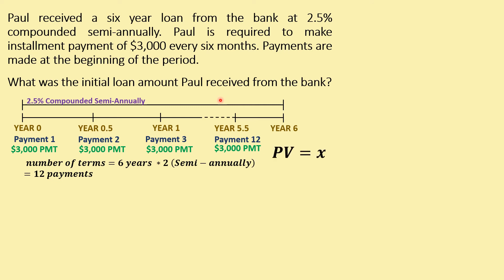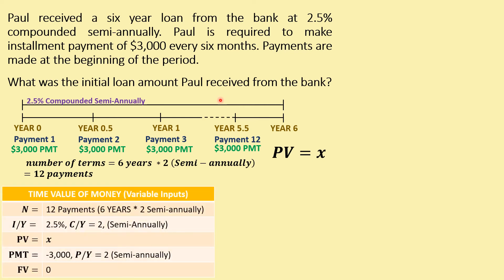The question asks for the initial loan amount — in other words, we need to solve for the present value of Paul's loan. The TVM variables are: N = 12, interest rate = 2.5%, compounding frequency for I/Y = 2 (semi-annually), PV = unknown (solving for this), PMT = −$3,000 (he's paying back the bank), payment frequency = 2 (semi-annually), FV = 0. Since this is also an annuity due, BGN must remain enabled on the calculator.